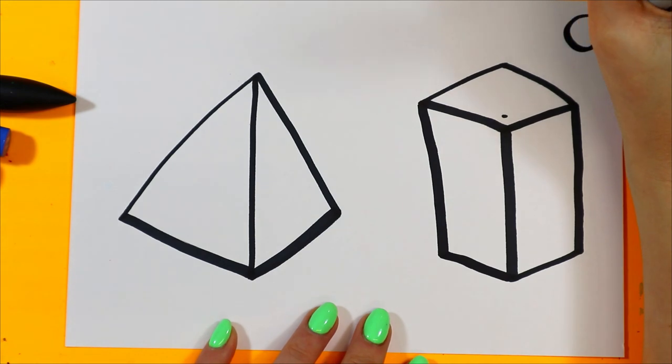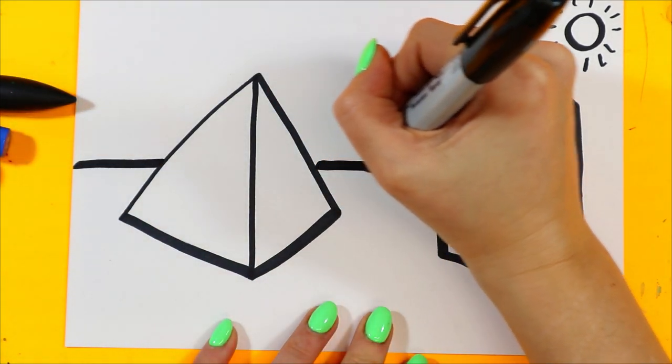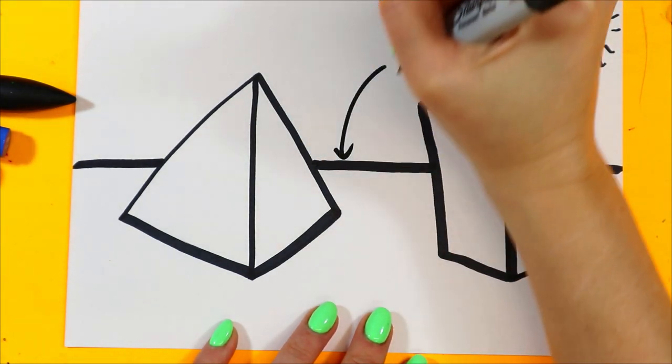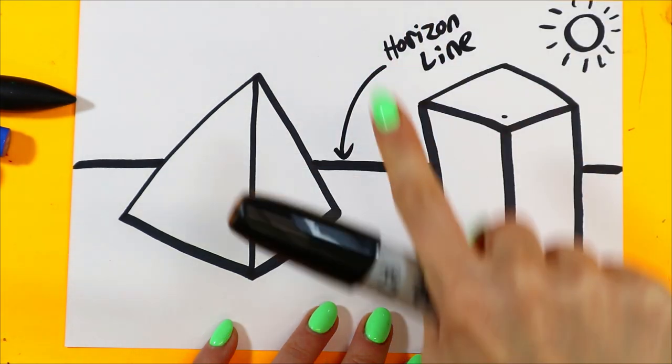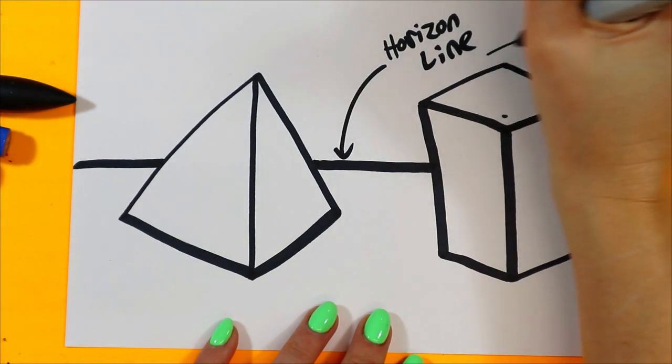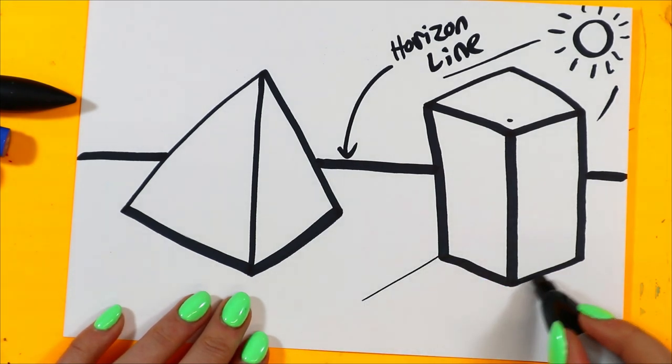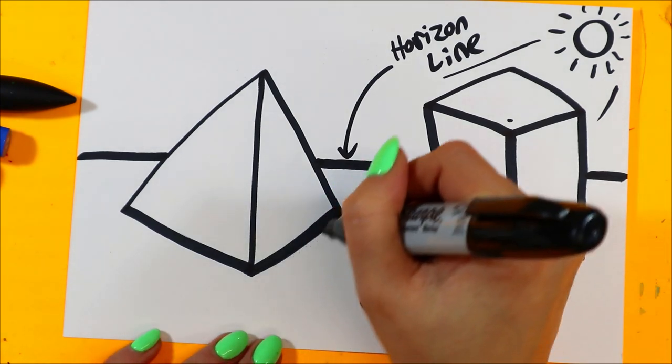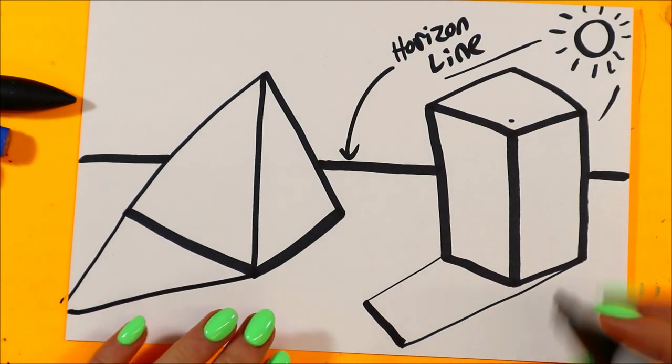And then we're going to determine our light source. We're going to put a sun on the top right of our paper and add our horizon line, the edge of the earth. So our light source is coming in this way, which means our cast shadows will be the opposite way. So we're going to make the shape on the ground going the opposite way. So these will be the cast shadows.